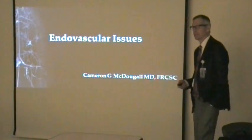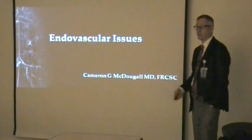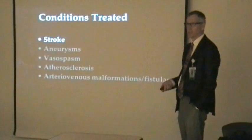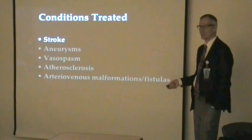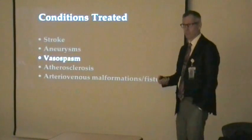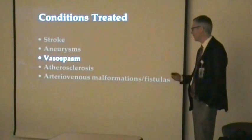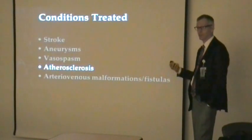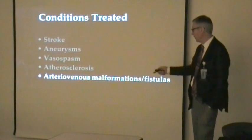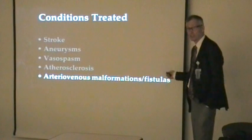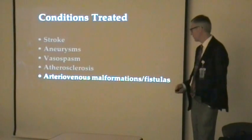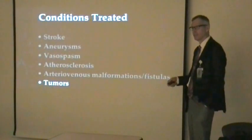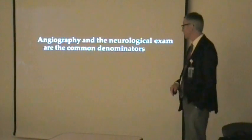We're talking about endovascular procedures, the different types of cases we're going to do, and what some of the nursing considerations are. The conditions we're covering are stroke, aneurysms, vasospasm — which happens after subarachnoid hemorrhage — atherosclerosis, meaning carotid artery stenosis and carotid stenting, arteriovenous malformation and fistula, and occasionally we embolize tumors preoperatively to devascularize them for easier surgical removal.